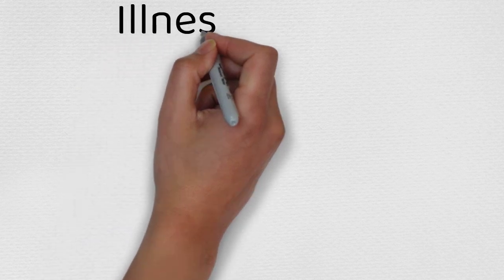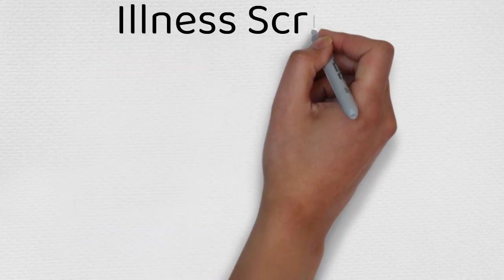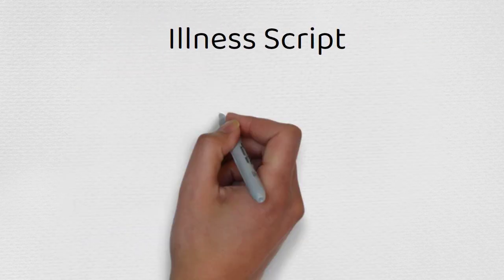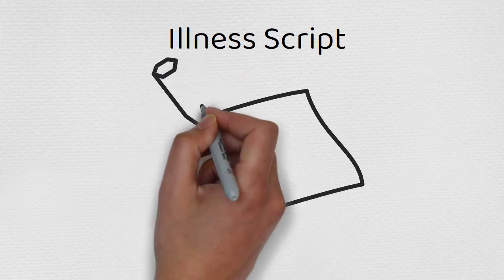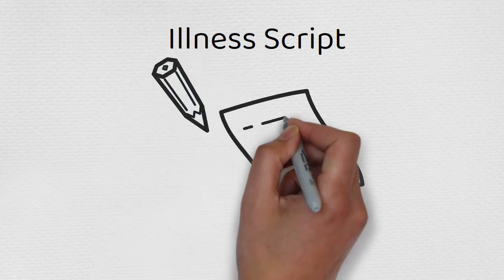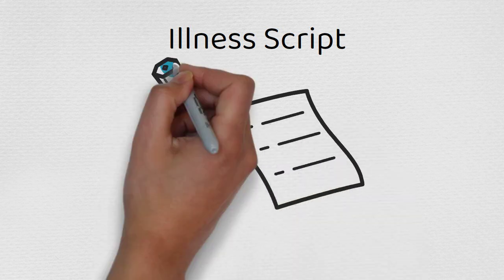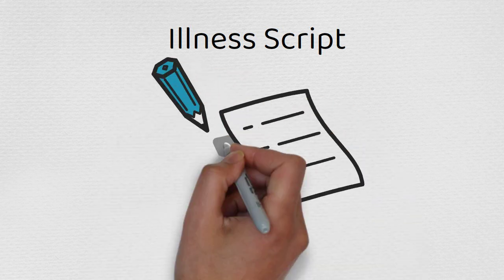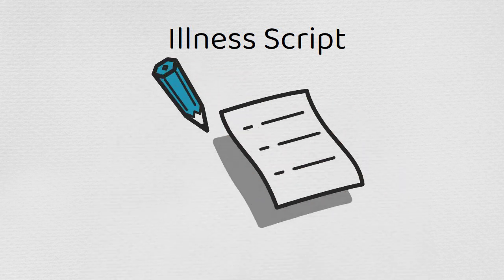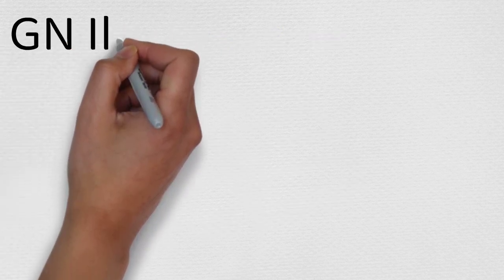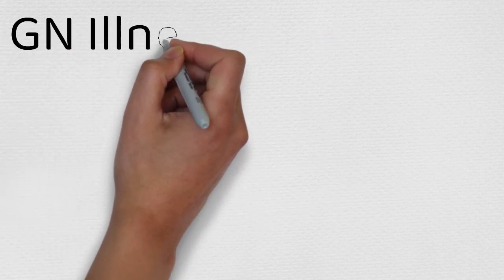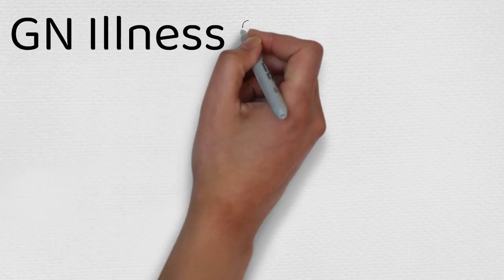In medicine, there's this simple idea called an illness script. It refers to the idea that every disease kind of plays out like a movie — it should follow a script, in fact. When it comes to glomerulonephritis, there's a specific illness script for this disease as well.